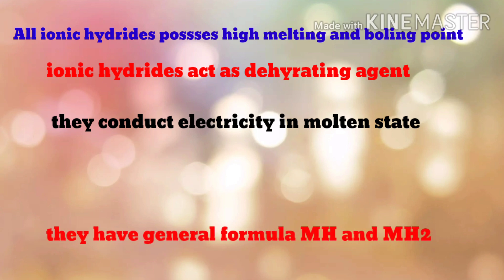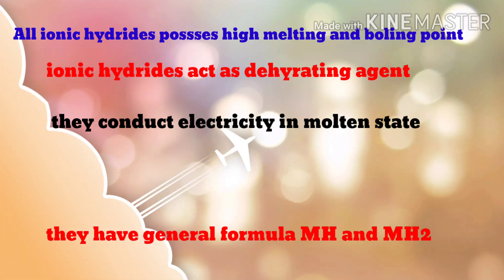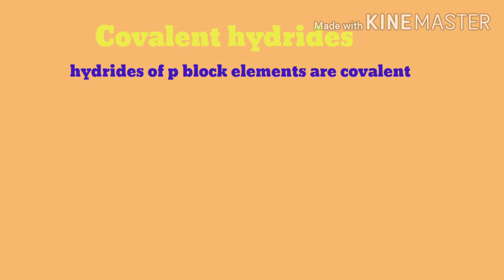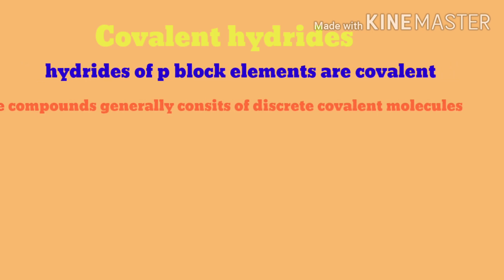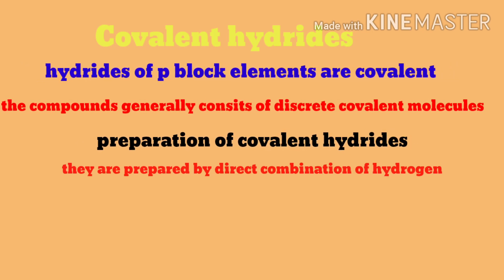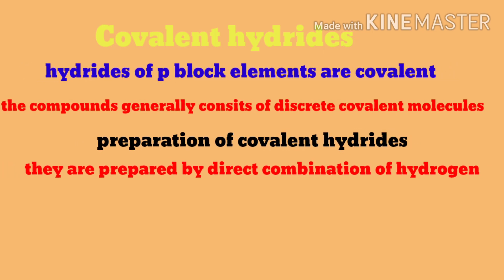Ionic hydrides can conduct electricity in the molten state. Ionic hydrides have the general formula MH and MH₂.